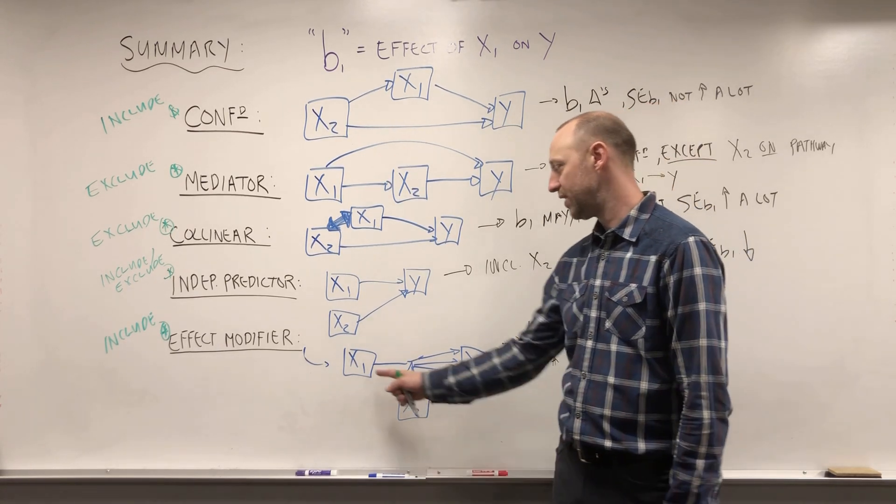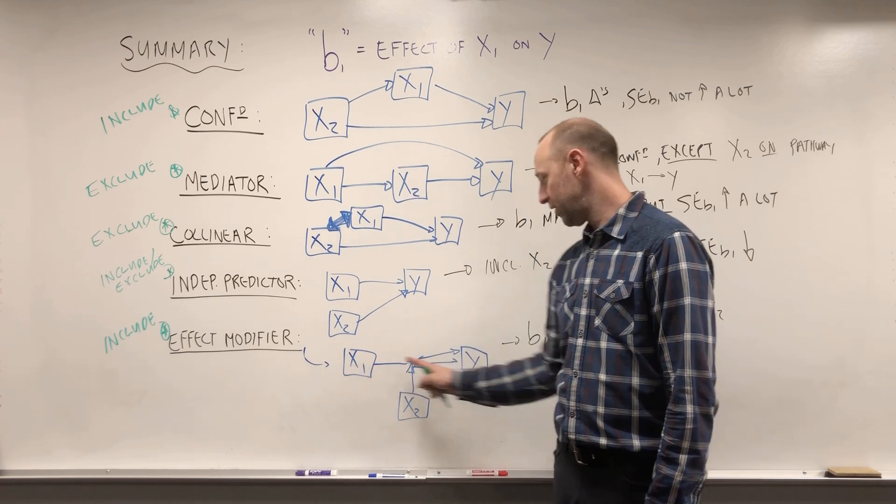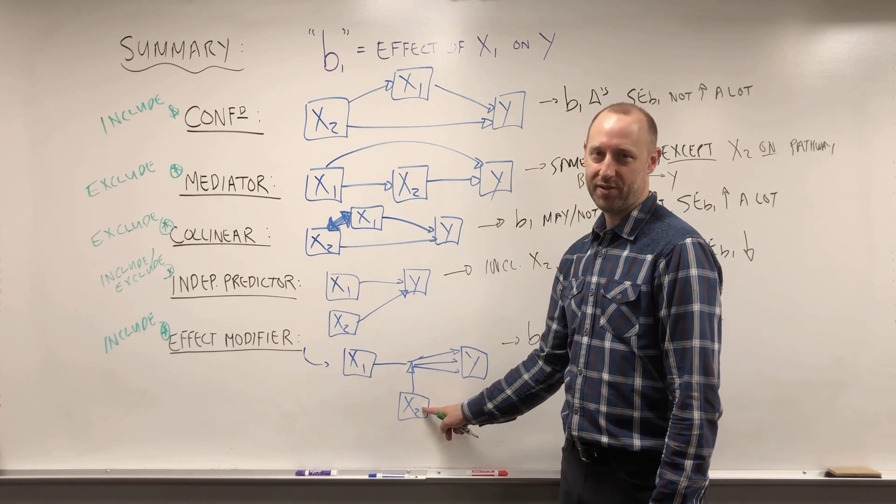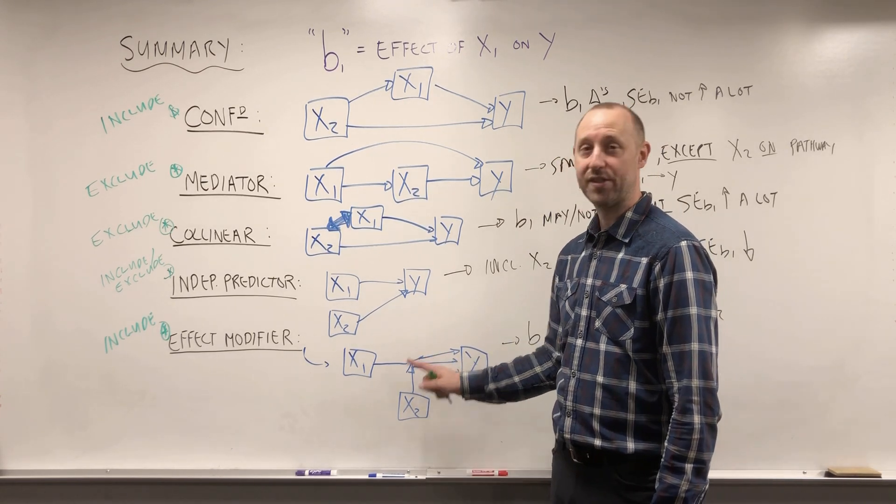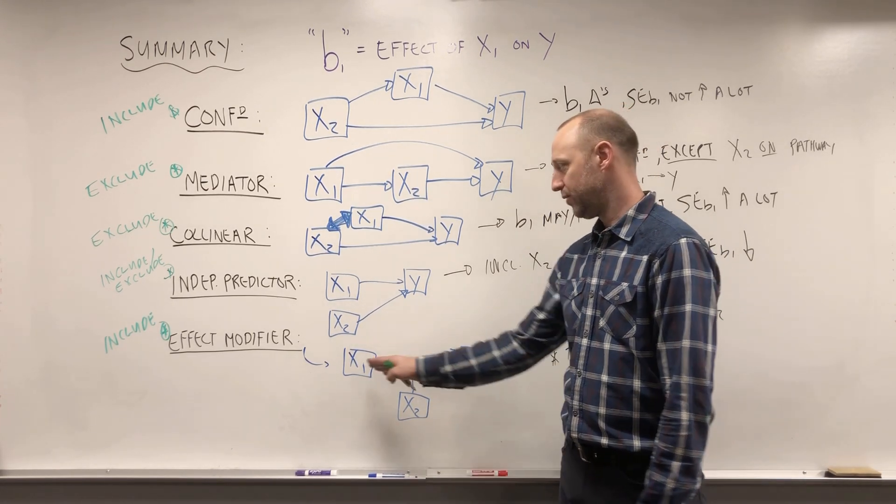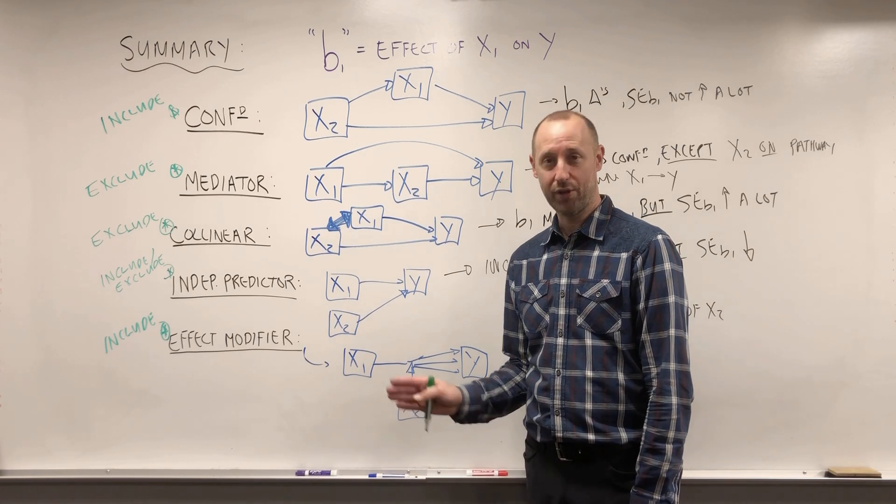If the effect that X1 has on the outcome Y changes depending on values of some other variable. So for example, we said if the effectiveness of a drug on some outcome is different for males and females, we want to include that in the model. We want to say here's the effect for males, here's the effect for females. So effect modifier, we want to include those in our model.